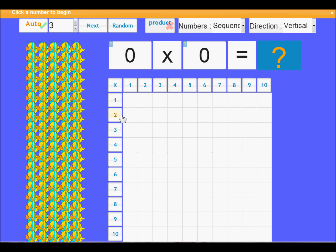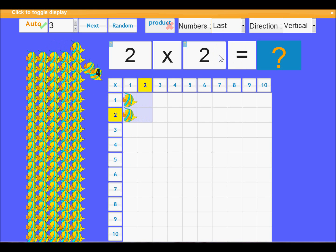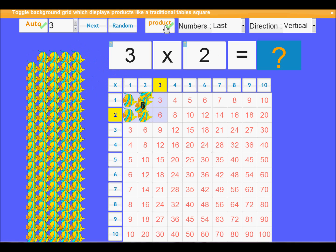So the last thing now to look at is I'm going to change numbers to last. So that's that done. I'm also going to click this product button. So now we can see the products as they appear on a traditional table square.